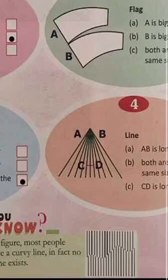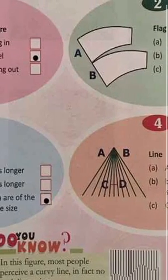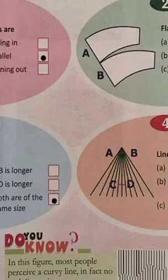Let's look at this picture. You can all see a curved line. But do you know what the reality is? No such line exists. It is just horizontal lines from the top and bottom aligned in such a way that to our eyes and vision, we see a curved line. This is what is called optical illusion.